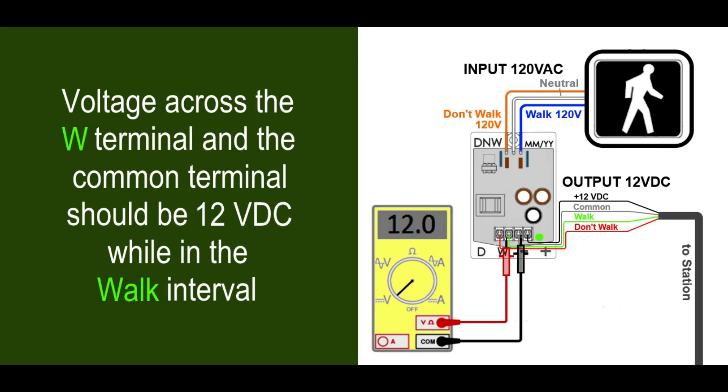During walk, the voltage across the walk terminal and the common terminal should be 12 volts as shown. The voltage across the don't walk terminal and the common terminal should also be 12 volts as shown.